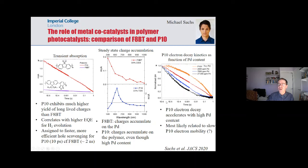As we change the palladium content in P10 — which is much harder to do because it's much harder to process — the kinetics of electron decay change. What we imagine is that these electrons are decaying by finding their way to a palladium site to drive the catalysis of proton reduction, but that happens rather slowly compared to the timescale of the proton reduction catalysis on palladium.